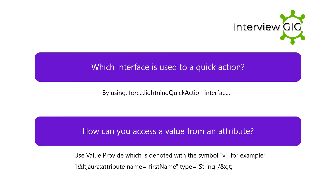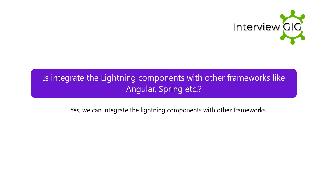How can you access a value from an attribute? Use value provider, which is denoted with the symbol V. For example: <aura:attribute name="firstName" type="String" />, then reference it using {!v.firstName}.